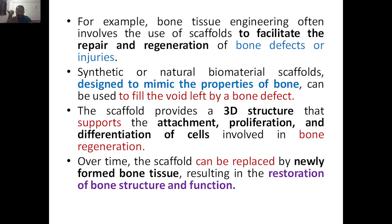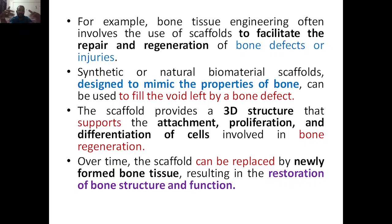The scaffold provides a 3D structure that supports the attachment, proliferation, and differentiation of cells, as discussed with muscles. Cells will come, attach, proliferate — divide — then differentiate, and finally give you the tissues involved in bone regeneration, and a new bone will be formed. Over time the scaffold can be replaced by newly formed bone tissue; since the scaffold is biodegradable, it automatically degrades, resulting in restoration of bone structure and function.